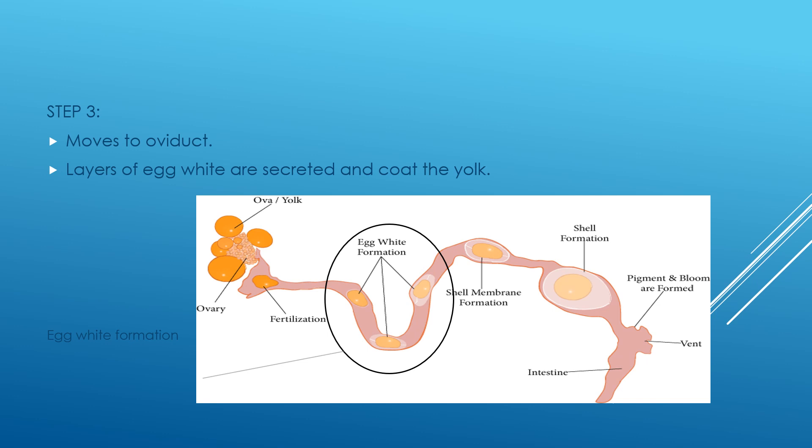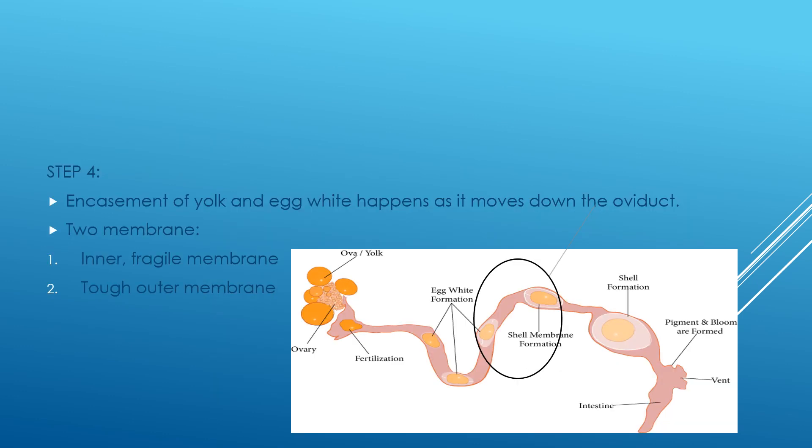In this step, the egg white formation occurs. In step 4, the encasement of yolk and white happens as it moves down the oviduct. There are two membranes: the inner membrane and the outer membrane. The inner membrane is comparatively fragile, while the outer membrane is tougher than the inner membrane.